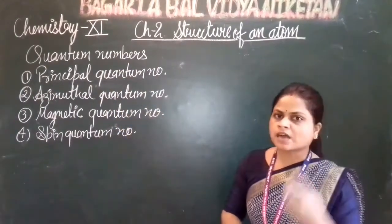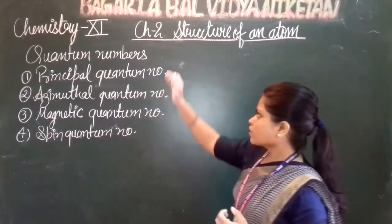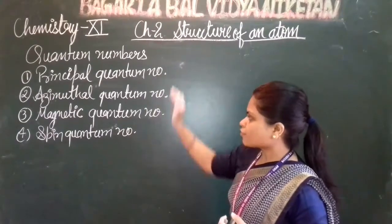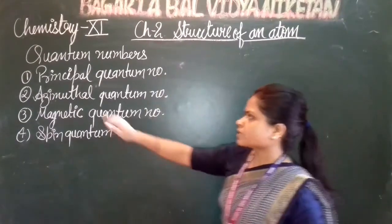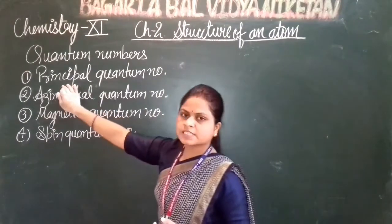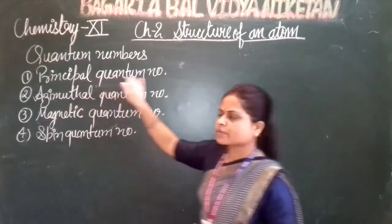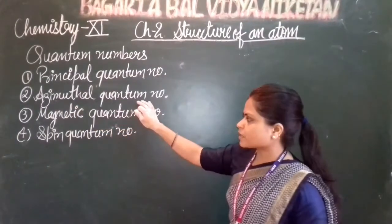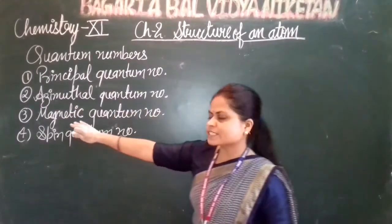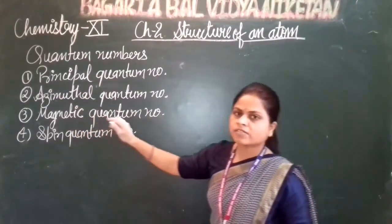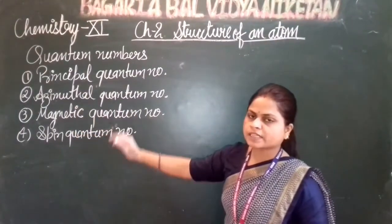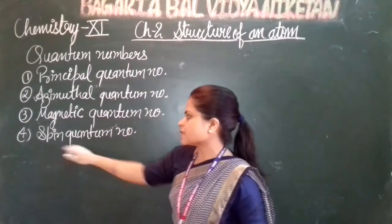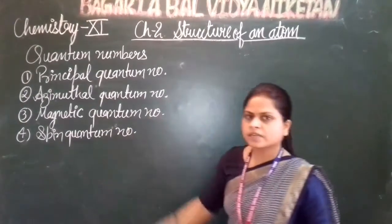There are four quantum numbers. First is the principal quantum number, second is the azimuthal quantum number, third is the magnetic quantum number, and the last one is the spin quantum number.